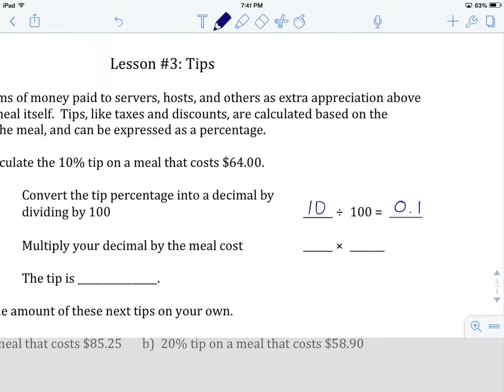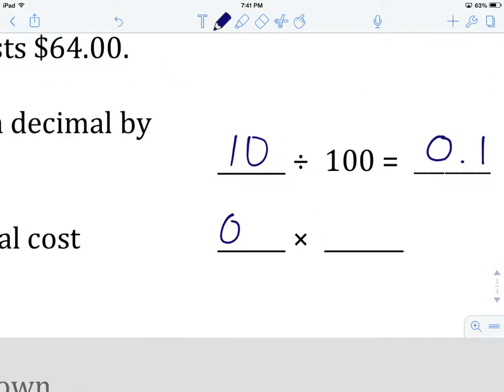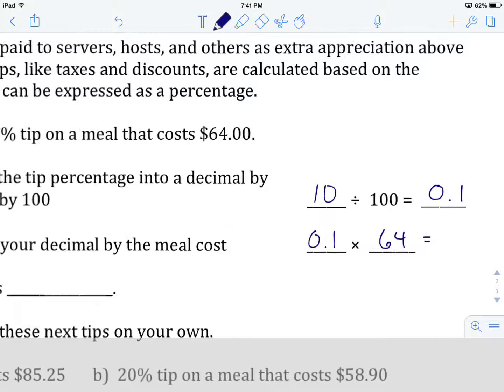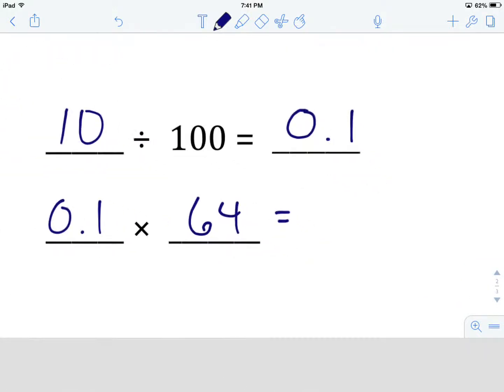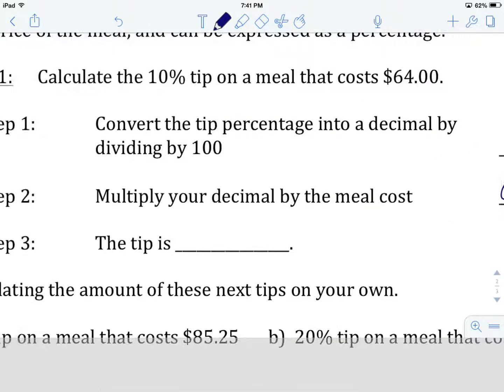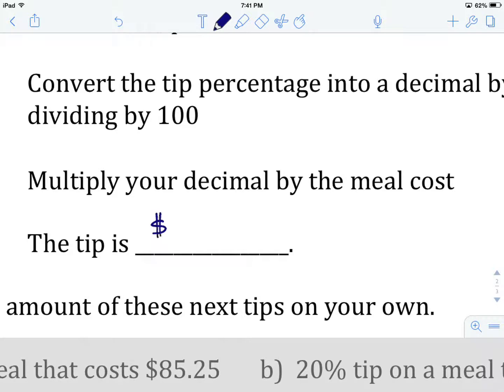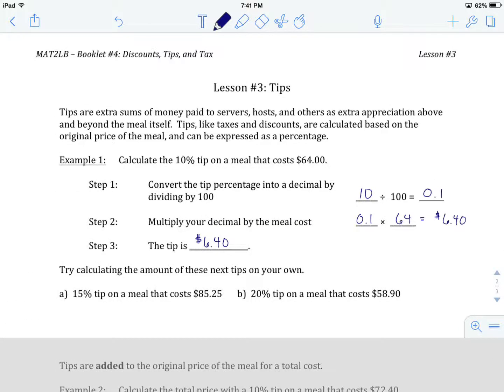Now that we've converted our percent into a decimal, second step is to multiply your decimal, that's 0.1 by the cost of our meal, which is $64. 0.1 times 64 will give us $6.40. And that's our answer. That's the amount of the tip on a $64 meal if we are tipping 10%. $6.40.